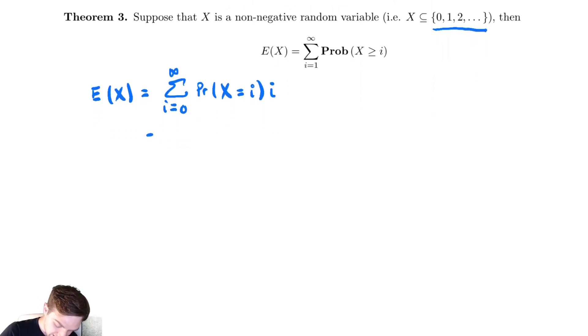Now, if we write this out, we have 0 times the probability that x is equal to 0 plus 1 times the probability that x is equal to 1 plus 2 times the probability that x is equal to 2 plus 3 times the probability that x is equal to 3. And we could keep going.